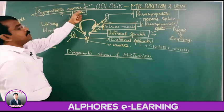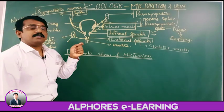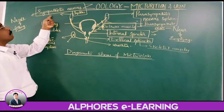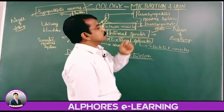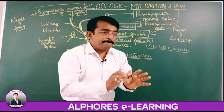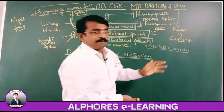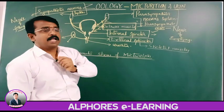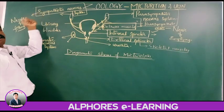The stimulation from the sympathetic nervous system causes the filling of urine in the urinary bladder. At the same time, the parasympathetic nervous system is responsible for the emptying of the urinary bladder — named the nerve of emptying, whereas sympathetic is the nerve of filling.